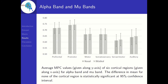The figure shows the average MPC values along the Y-axis for the six cortical regions given on the X-axis. The difference in mean for none of the cortical regions considered is statistically significant at 95% confidence interval in the alpha band.